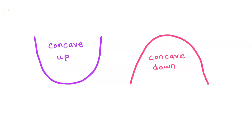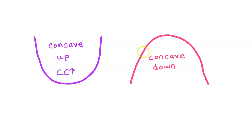In this video I will show you how to use the second derivative to find the intervals where a function is concave up or concave down. This purple function is concave up everywhere — I will abbreviate concave up like this. This red function is concave down everywhere — I will abbreviate concave down like this.